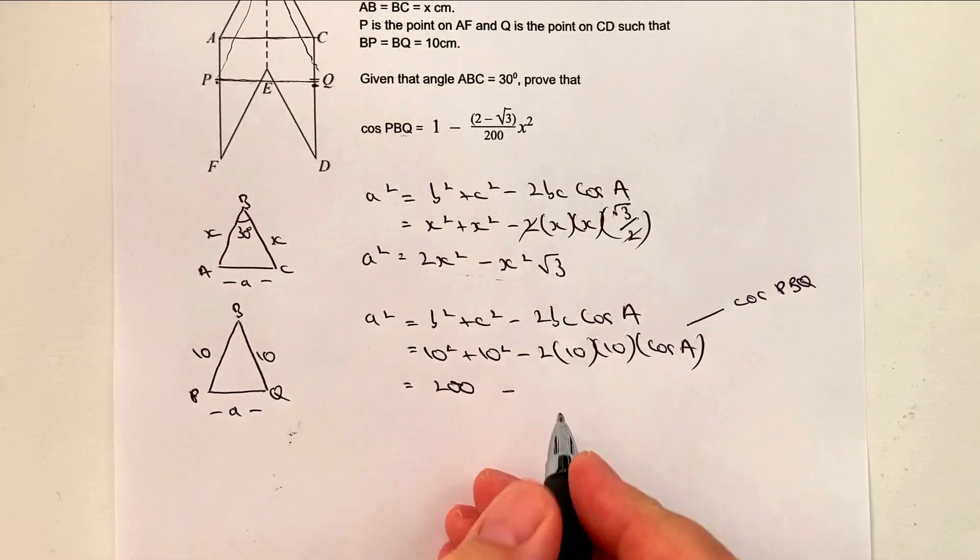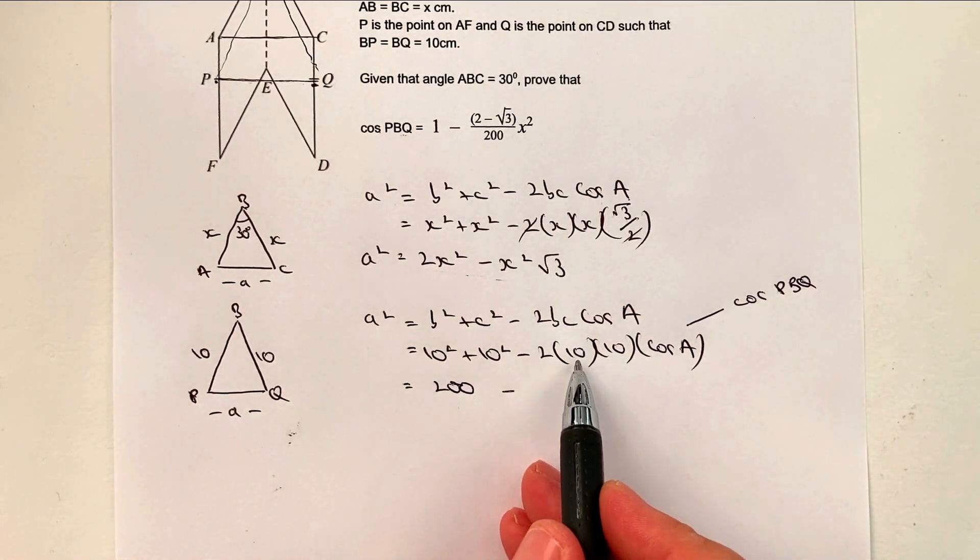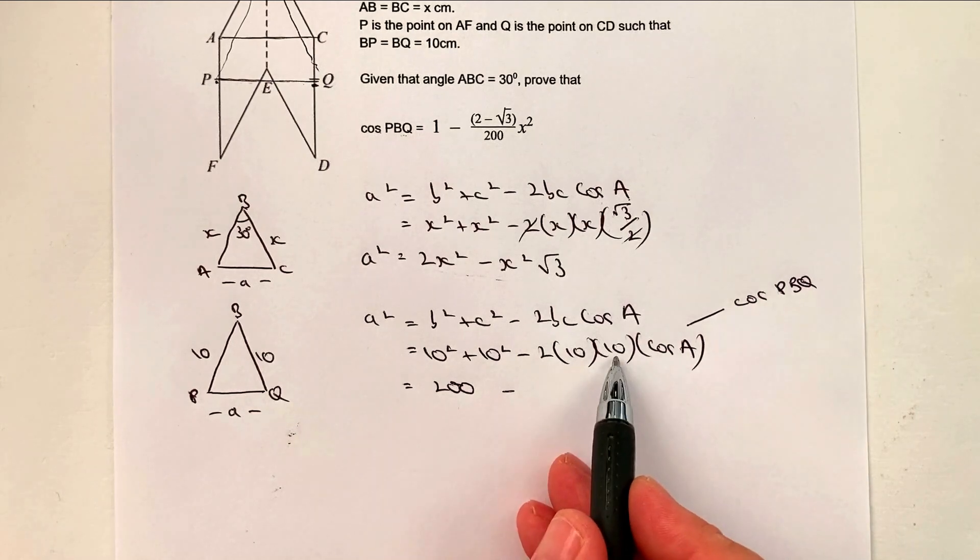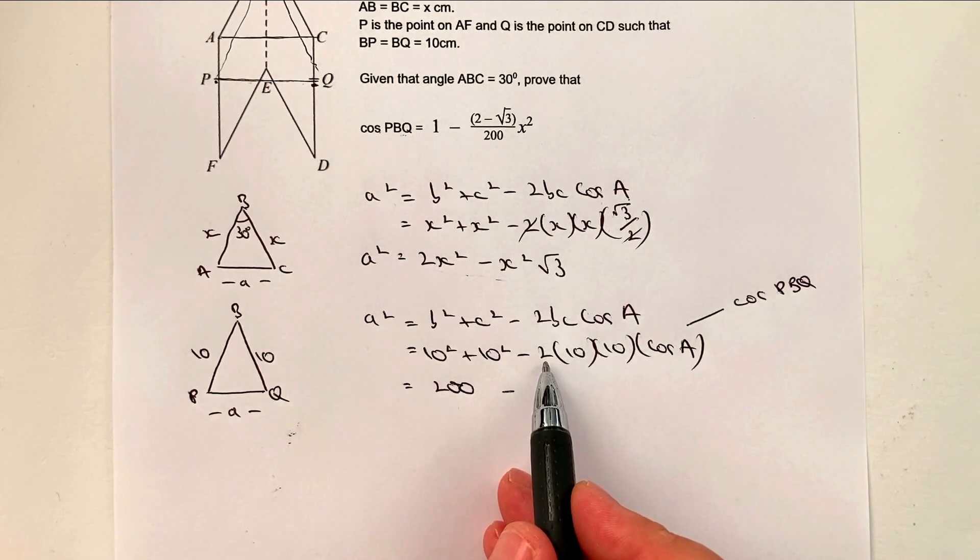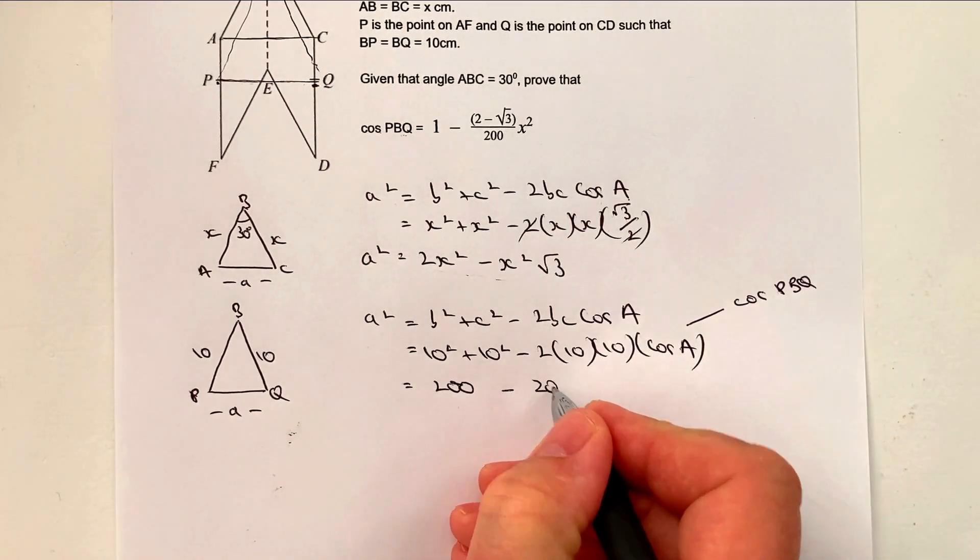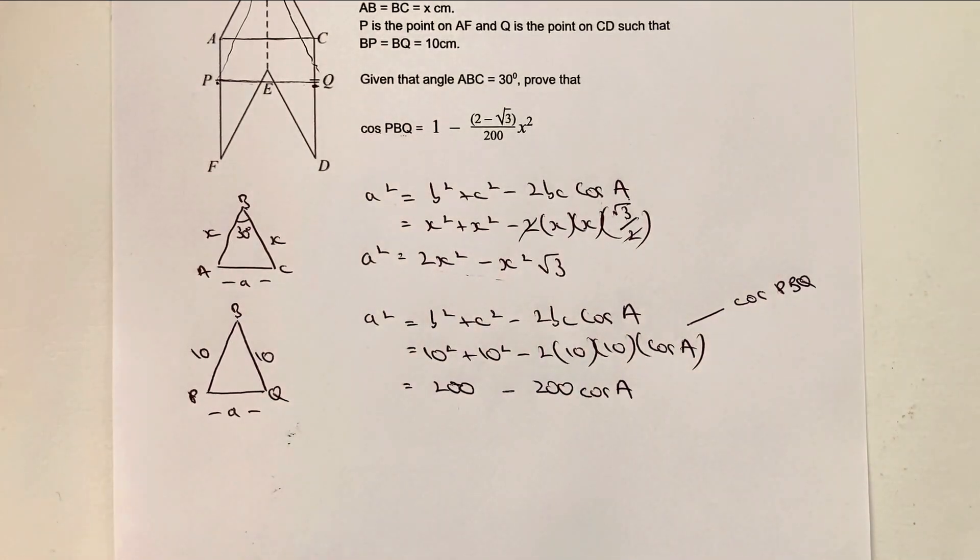Okay, and then I've got minus 2 times, well, 10 times 10 is 100. And 10 times 2 is 200. So that's 200 cosine A.